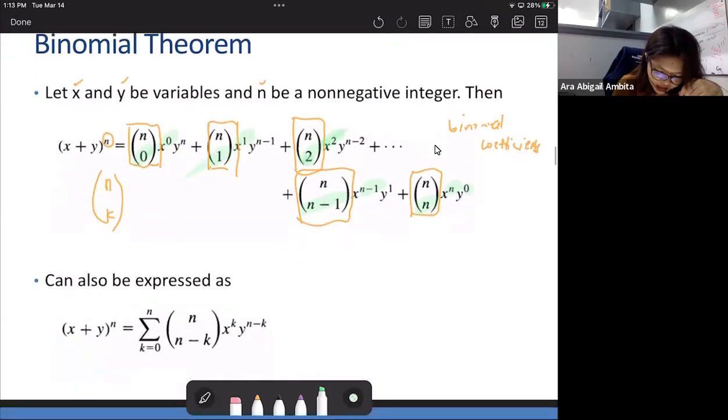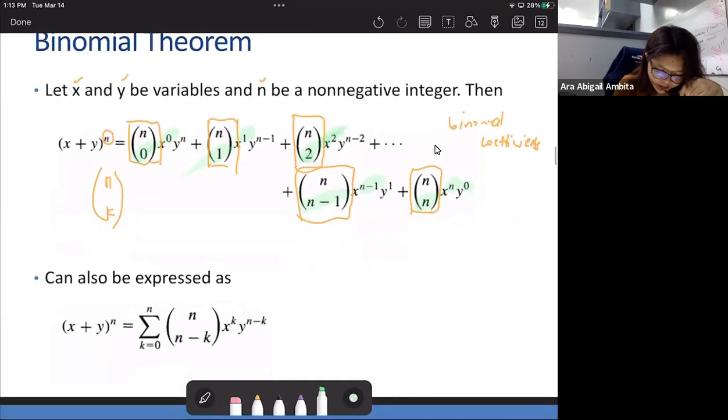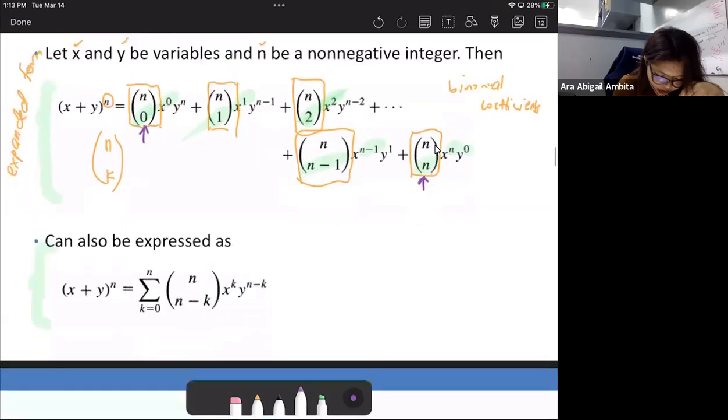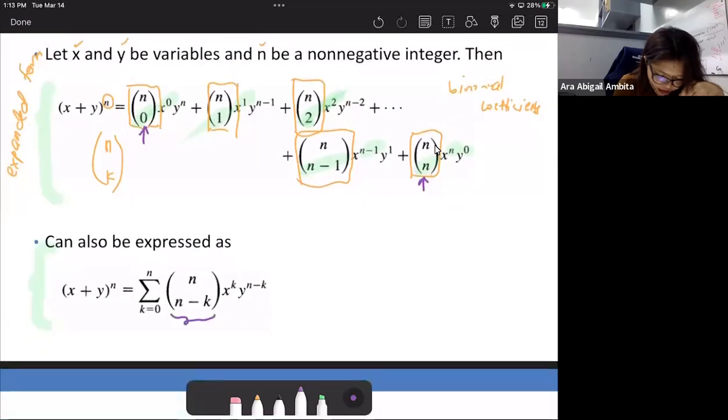So this may be expressed in a shorter or more general form. This is the form in the much shorter version through the summation. So x plus y quantity raised to n is equal to the summation from k equals 0 to n. So you can see here this already k from 0 until n, where we have the coefficient n taken n minus k or n taken k. This is also equivalent to n taken k times x raised to k times y raised to n minus k.